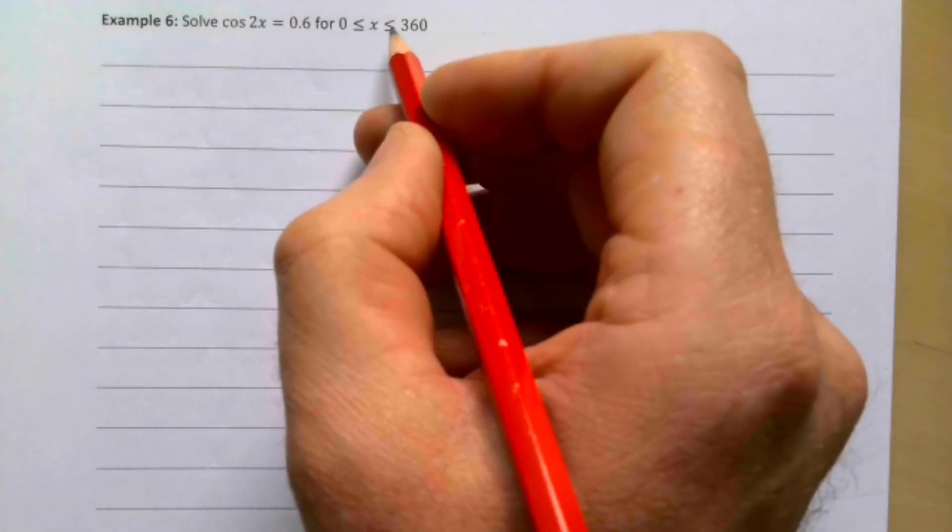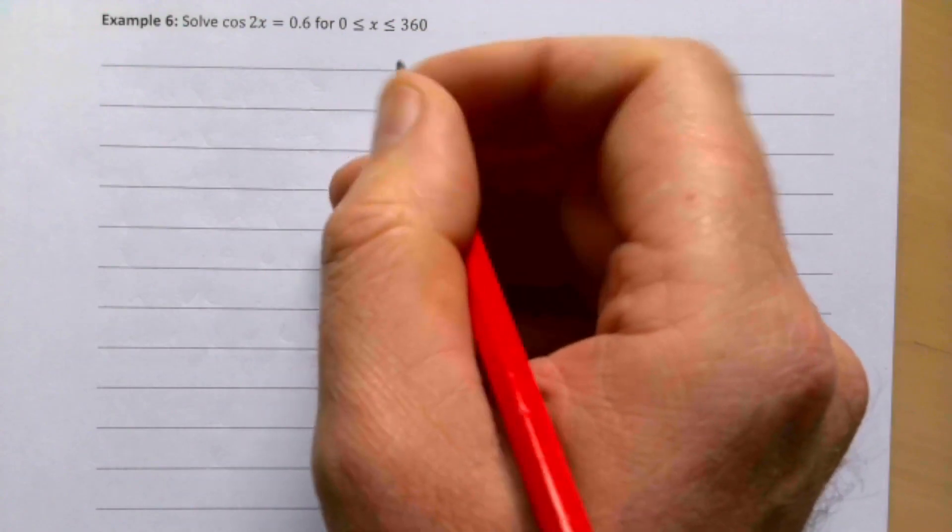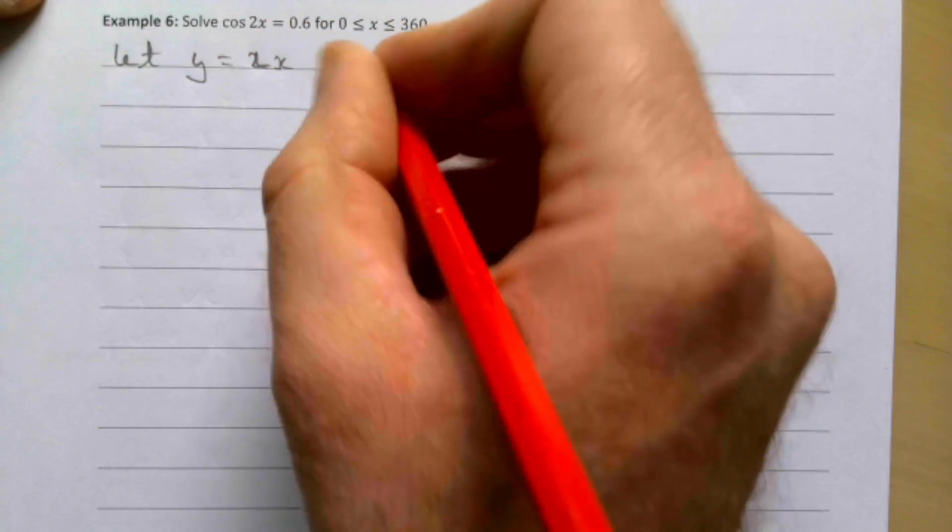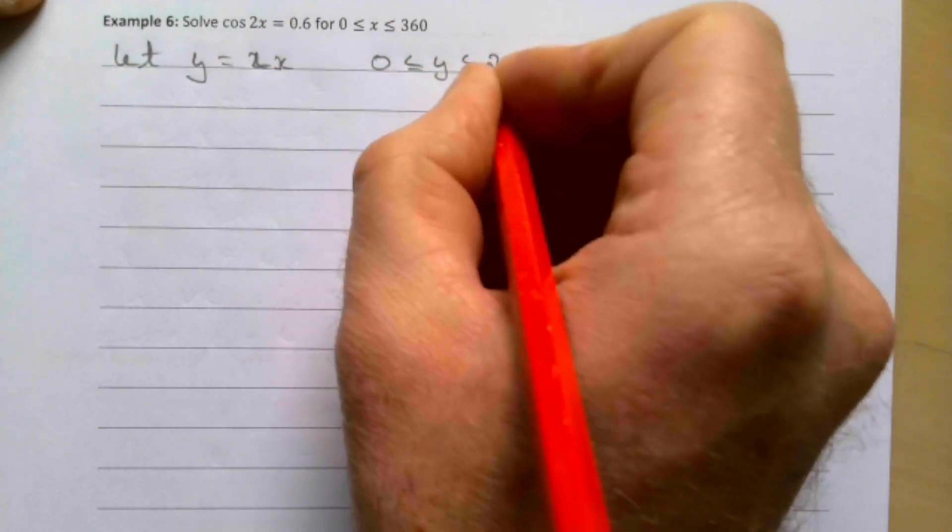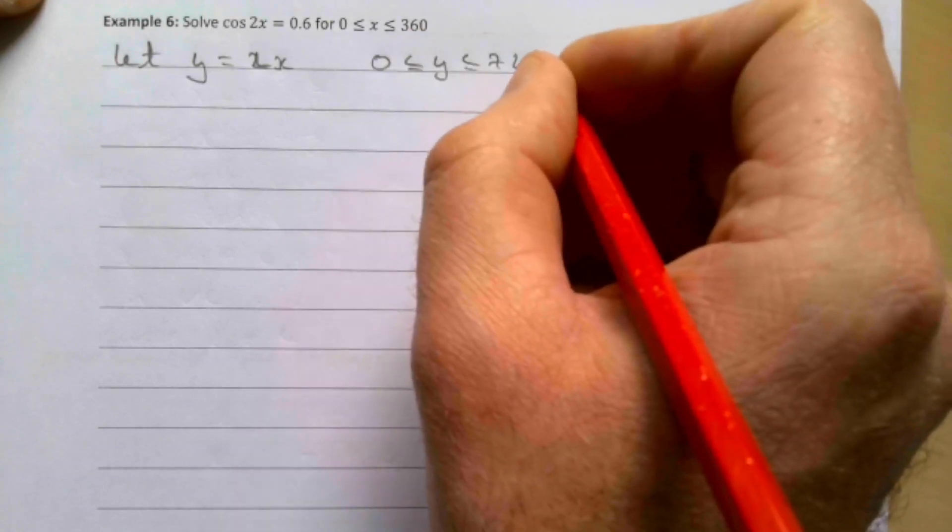This 2x here is important, because it means we need to go around twice to get all our solutions in. We might want to first let y equal 2x, and if we let y equal 2x, then the range we solve for y is actually between 0 and 720. That gets us to go around twice.